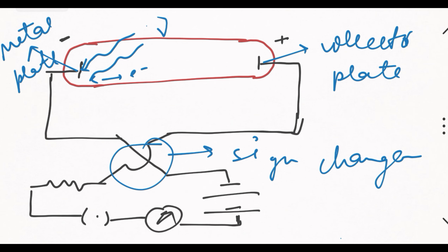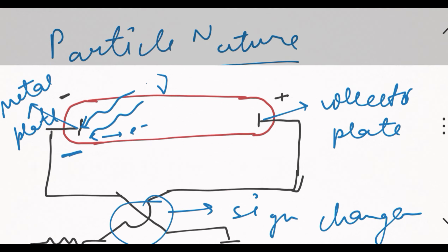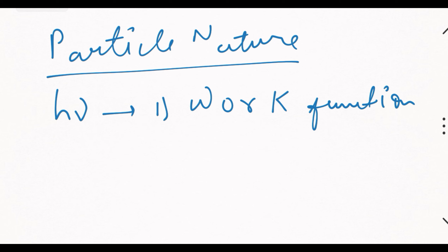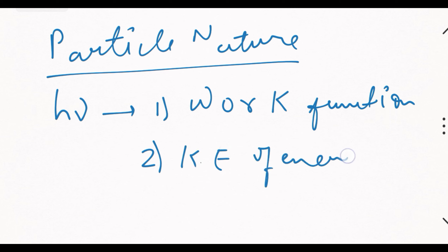When light of a certain frequency falls on a metal plate, the incident photon's energy is divided into two parts: first, the work function of the material, and second, the kinetic energy of the ejected electron. The incident photon's energy is totally used — some energy goes into the work function to eject the electron, and the remaining energy becomes kinetic energy.